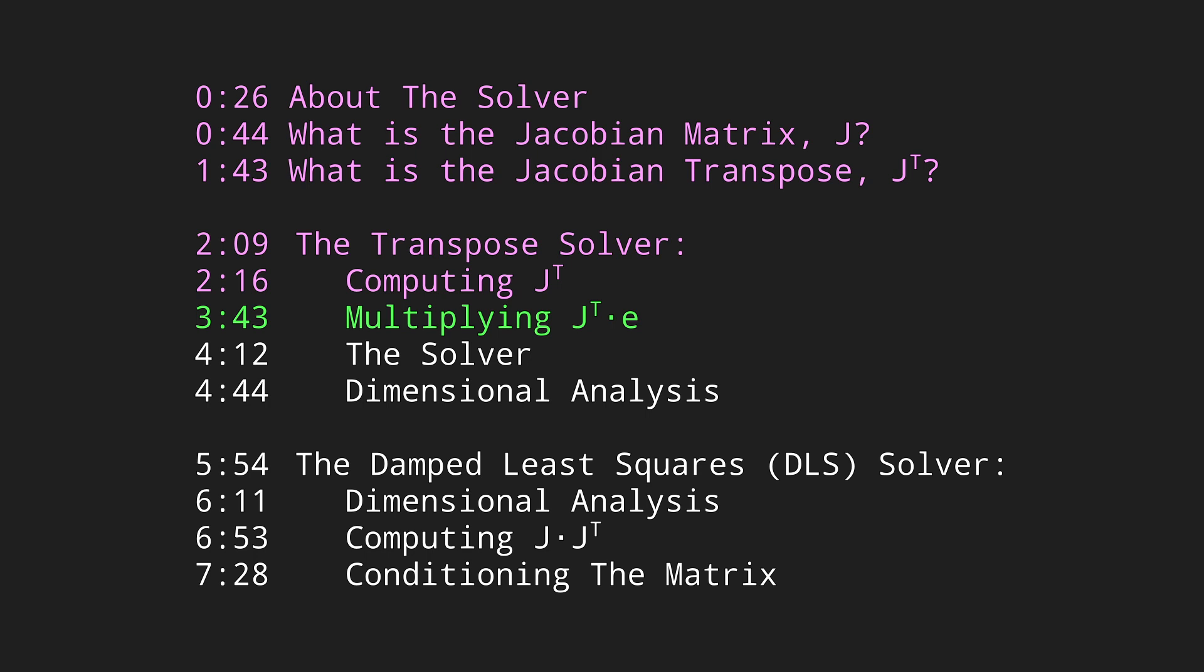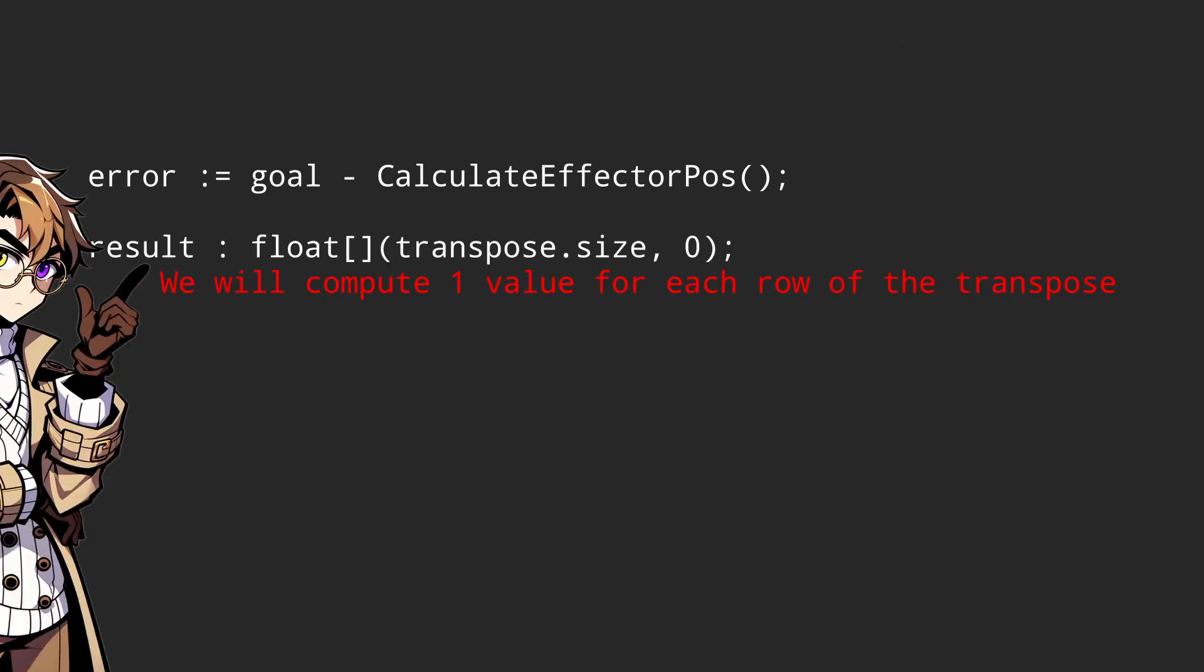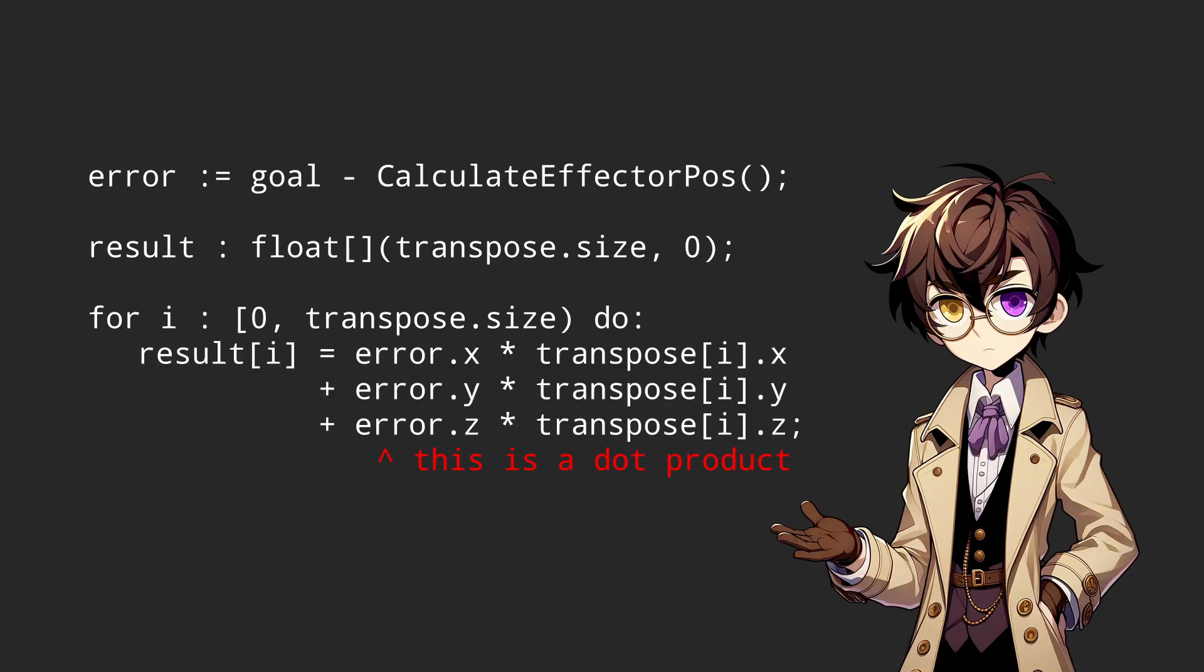Multiplying the error by the transpose. The goal of the Jacobian is to minimize the error, the difference between the goal state and the current effector state. The important thing in this case is we don't actually do any complex calculus here. We'll be operating on each item in this array independent of every other. To multiply the transpose by the error, all we need to do is multiply each component individually and sum them up. That's it.